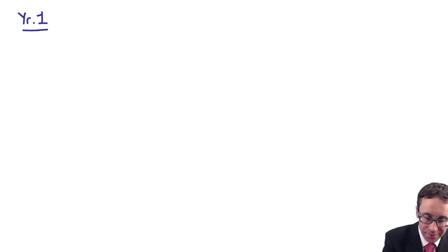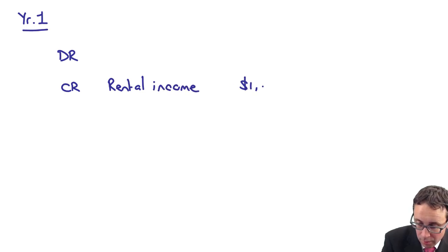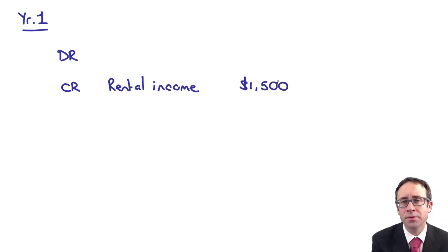If you want the debits and the credits, if we go through that and look at it for year one, the first year we've leased the asset out rent-free so we don't have any cash so that gives us a bit of an issue with the debit but for the credit we credit our rental income.